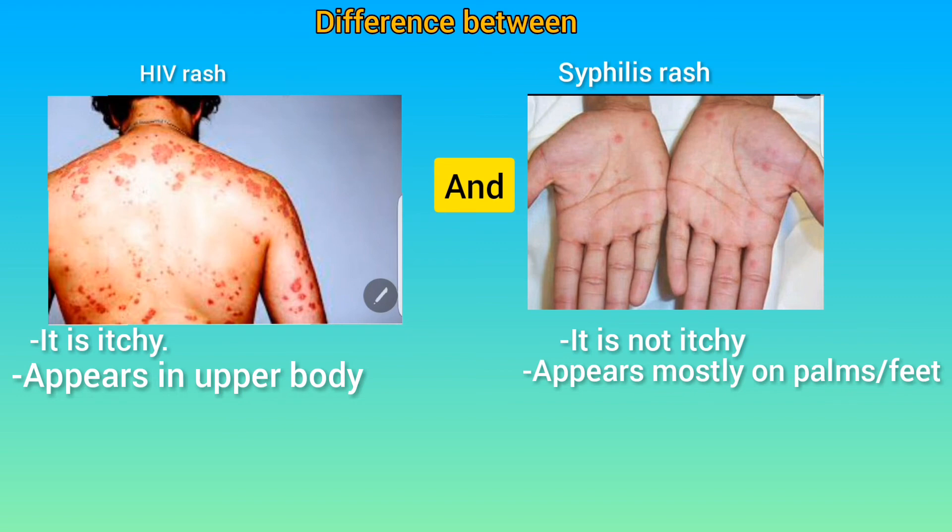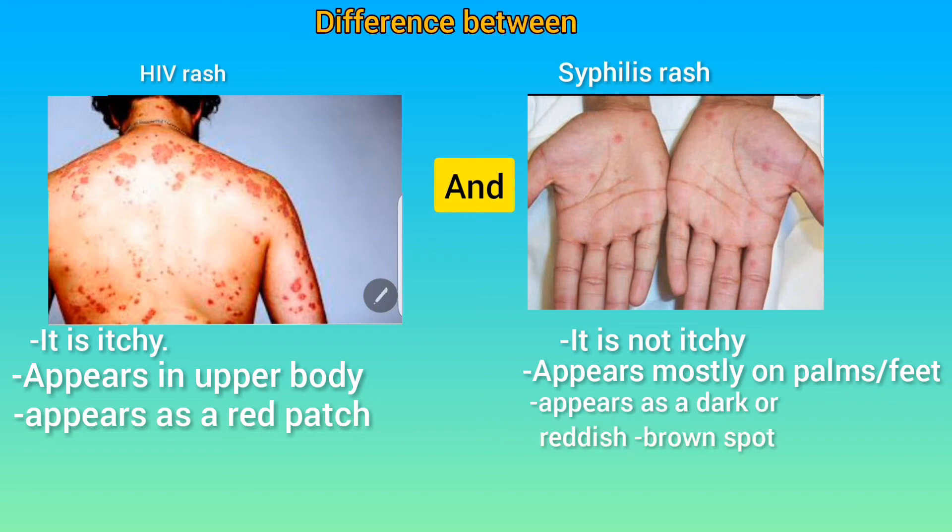The third difference is in their color. HIV rash appears as a red patch with tiny bumps in it, while syphilis rash appears as darker reddish-brown spots that are sometimes too light to be seen.